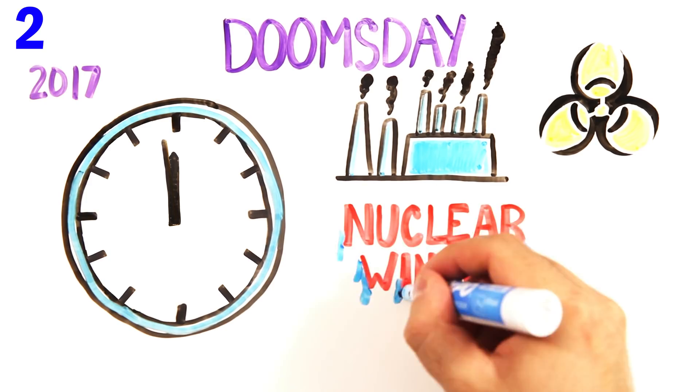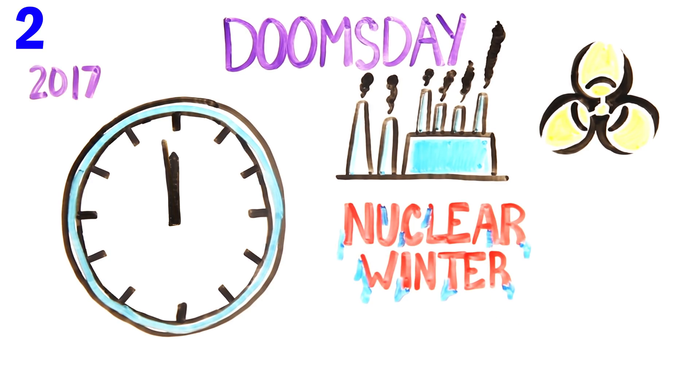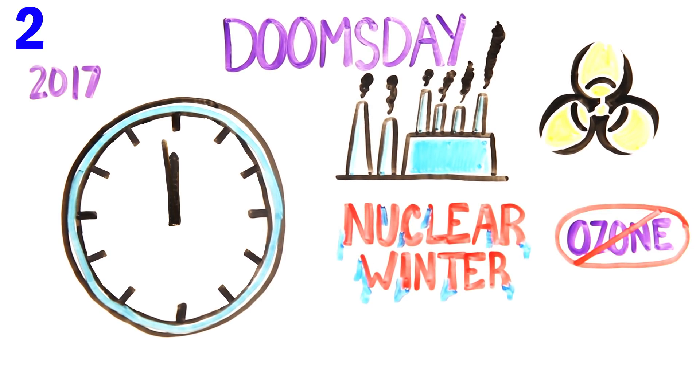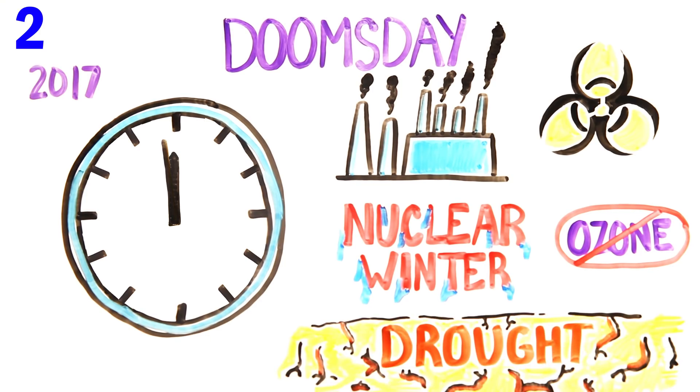Even a small nuclear war could create a nuclear winter, which would cause global cooling and damage to the ozone layer that may ultimately create droughts that last more than a decade. But the greatest threat of all? Researchers currently believe it's artificial intelligence.